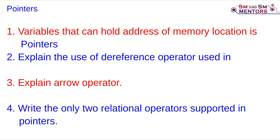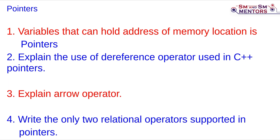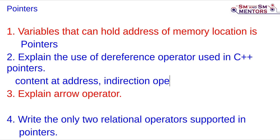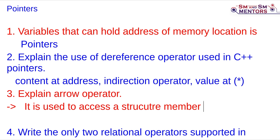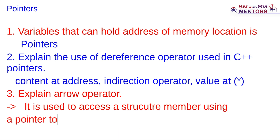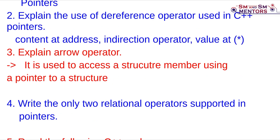Explain the use of the dereference operator used in C++. The dereference operator is called the 'contents-at address' operator, also known as the indirection operator or 'value at' operator. Its symbol is star (*). Also, the arrow operator (->) is used to access a structure member using a pointer to a structure.